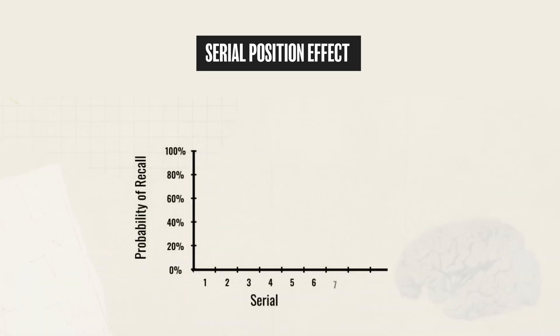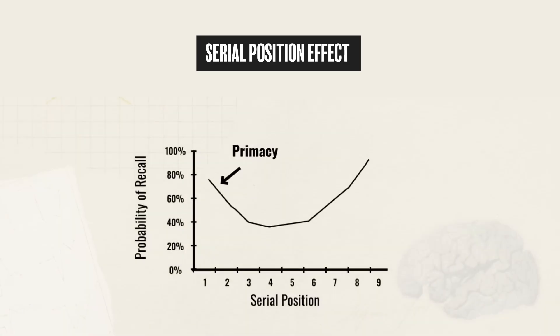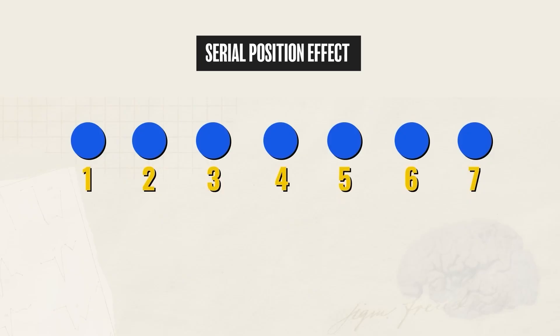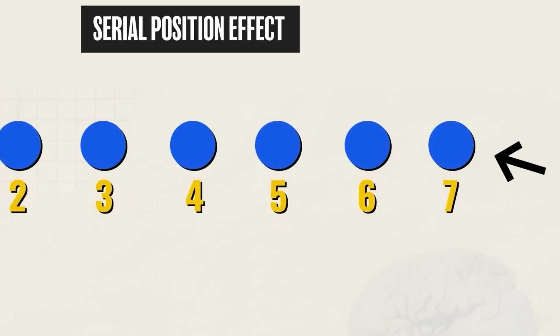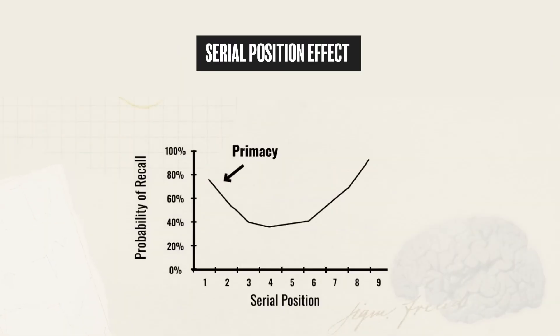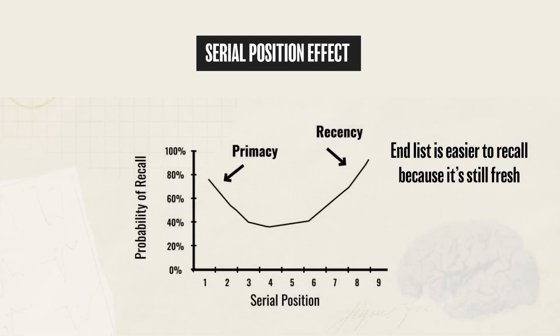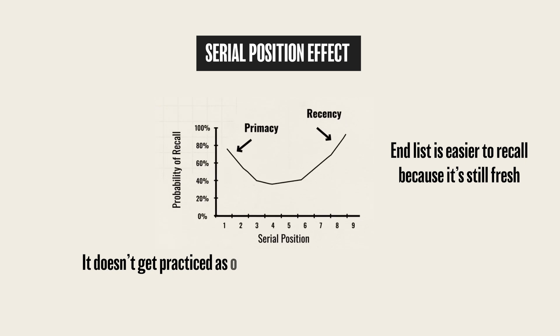This happens because of the Primacy Effect, which states that information at the beginning of a list is more memorable because it's had more time to be rehearsed and encoded into long-term memory. For instance, when practicing a speech, every time you mess up you start over, giving the most practice time to the start. As for the end of the list, the Recency Effect explains that information there is easier to recall because it's still fresh in our mind. Unfortunately, information in the middle is the most difficult to remember since it doesn't get practiced as much and is not the most recent.